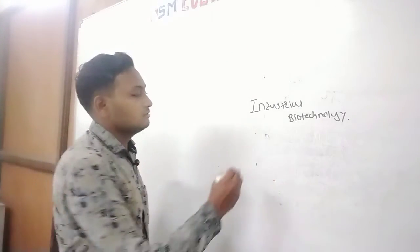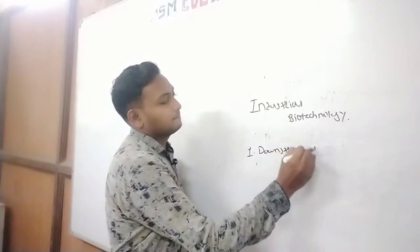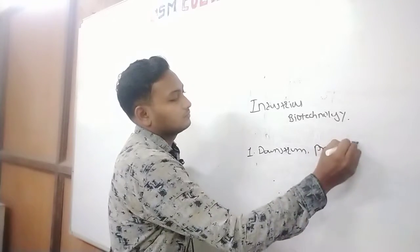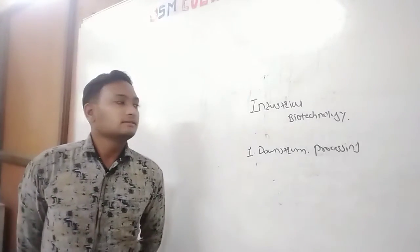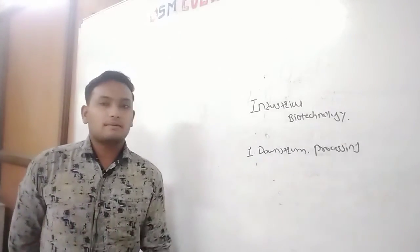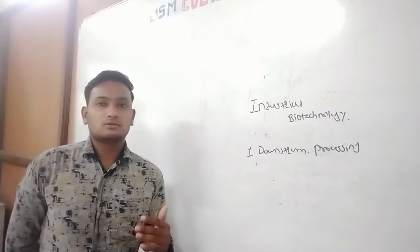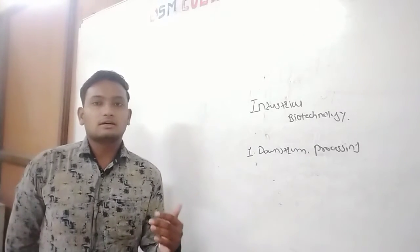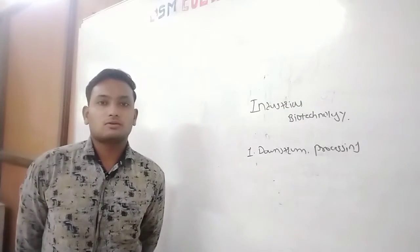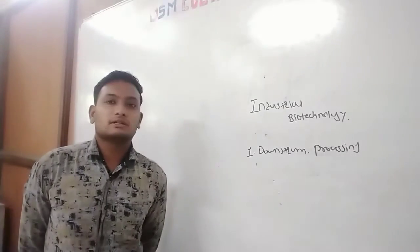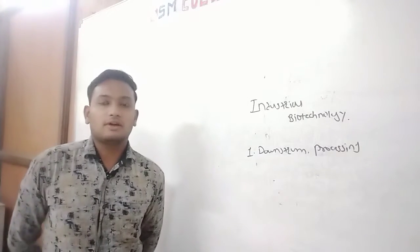Looking at your syllabus, the first topic depends upon downstream processing. We know about fermentation — there is fermentation design. Before the fermentation design, we are applying mainly two processes: that is the upstream process and the downstream process. The upstream process is before the fermentation process. The downstream process is after the fermentation process, for the isolation of the products. These are the two main processing methods used for the production and isolation of any fermentation products.